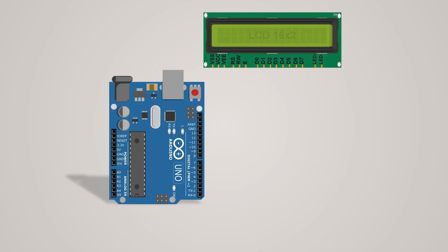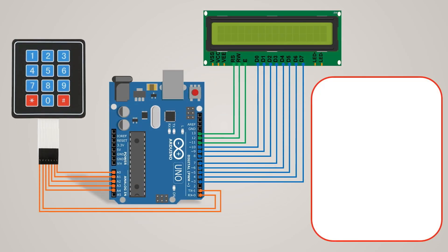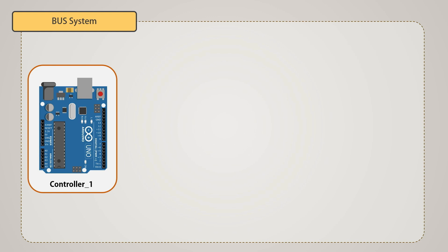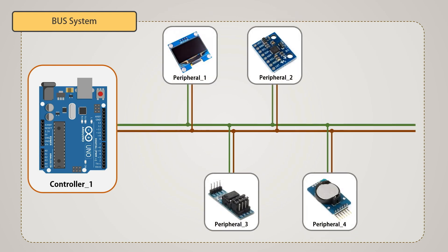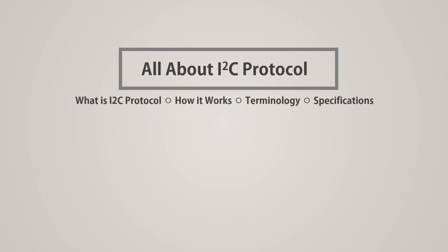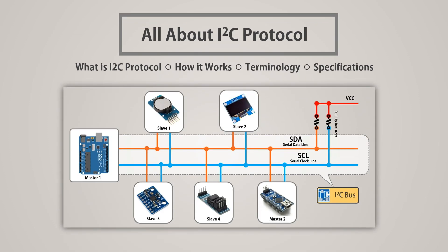When we are using multiple devices with a microcontroller, the data and address lines of every single device will occupy significant pins in the process of communication. So, transmitting and receiving information between two or more devices requires a common communication path, called a bus system. For the purpose of transferring data between integrated circuits, there is a bidirectional, two-wired serial bus, called the I2C bus.